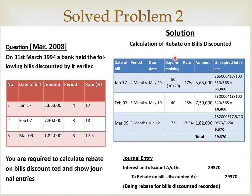Solution — Calculation of rebate on bills discounted. For the first bill, January 17 is the issue date. Add 4 months: February, March, April, May — 17 plus 3 days grace period = May 20. Days remaining after March 31st: April (30 days) and May (20 days) — 30 plus 20 = 50 days. The interest for that period is Rs. 85,000. For the second bill, February 7 plus 3 months: March, April, May — 7 plus 3 days grace period = May 10. 40 days remain after the financial year, so interest is Rs. 14,400.